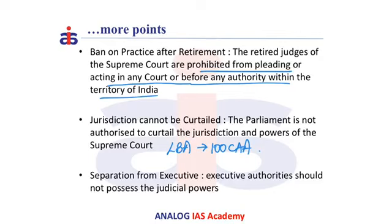The last point is the separation from the executive. Article 50 of the Indian Constitution, that is the DPSP, speaks about the separation of the executive from the judiciary in public-related matters. This provision has been enforced through the Criminal Procedure Code of 1973.